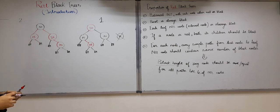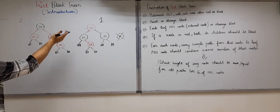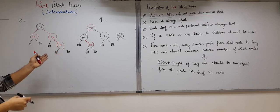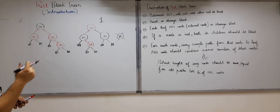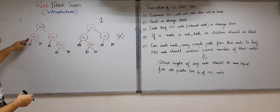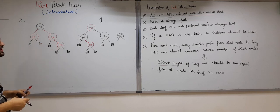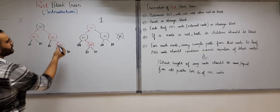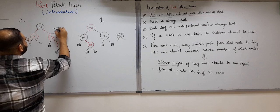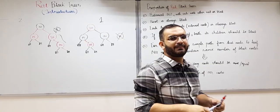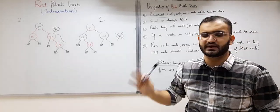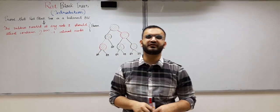For the second example: it is a balanced binary search tree with each node red or black — first property followed. The root is black — second property followed. All external nodes are black — third property followed. For the fourth property, if a node is red, both children should be black. One of the red nodes has a child that is also red — so it violates the fourth property. Therefore both examples are not red-black trees because they violate some property.